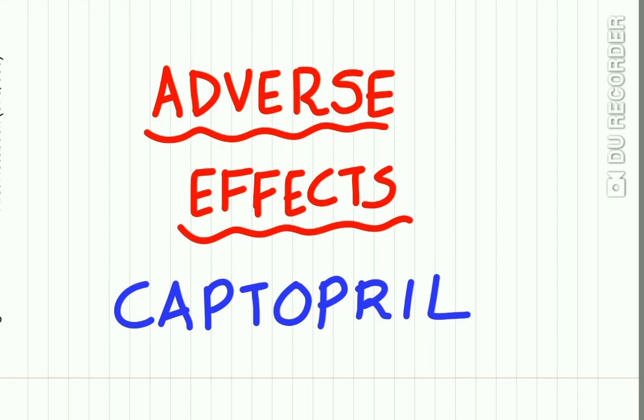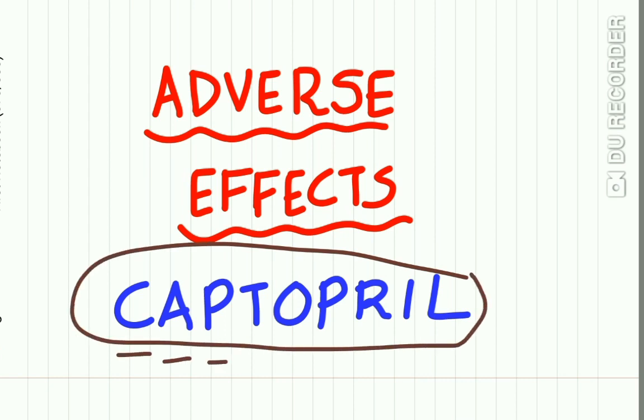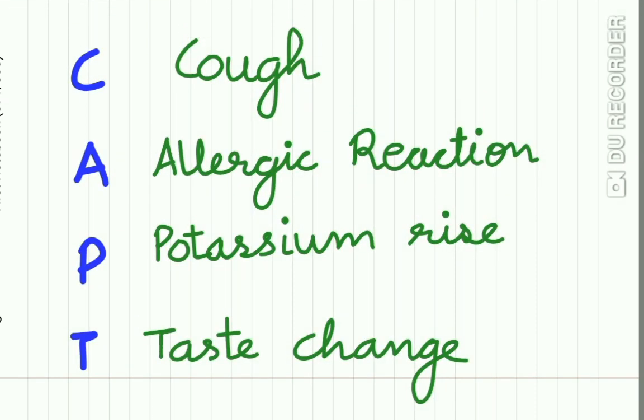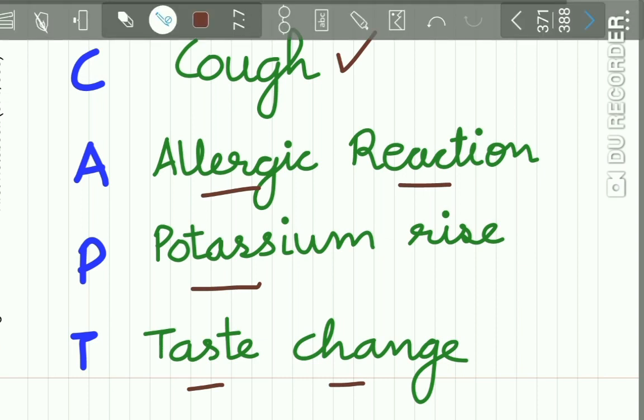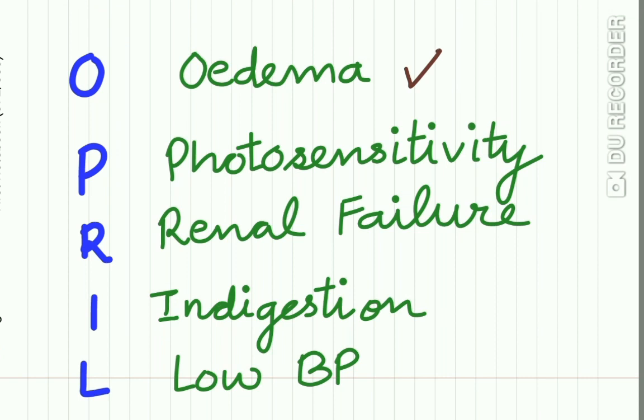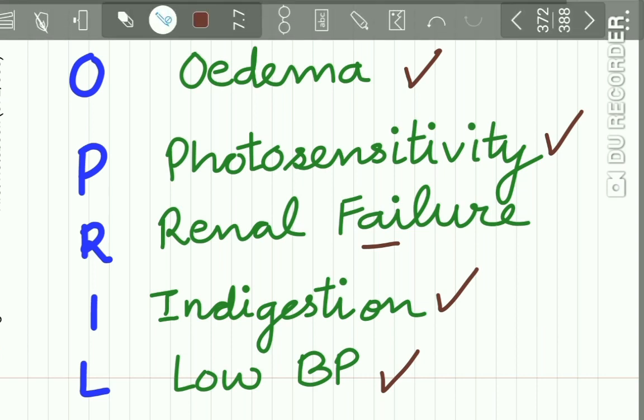The adverse effects of captopril—the mnemonic is the drug name itself, CAPTOPRIL. Each letter denotes one side effect: C for cough, a dry cough; A for allergic reactions; P for hyperkalemia or potassium rise; T for altered taste sensation; O for edema or angioedema; P for increased photosensitivity; R for renal failure; I for indigestion; and L for very low blood pressure reported with regular or chronic use.